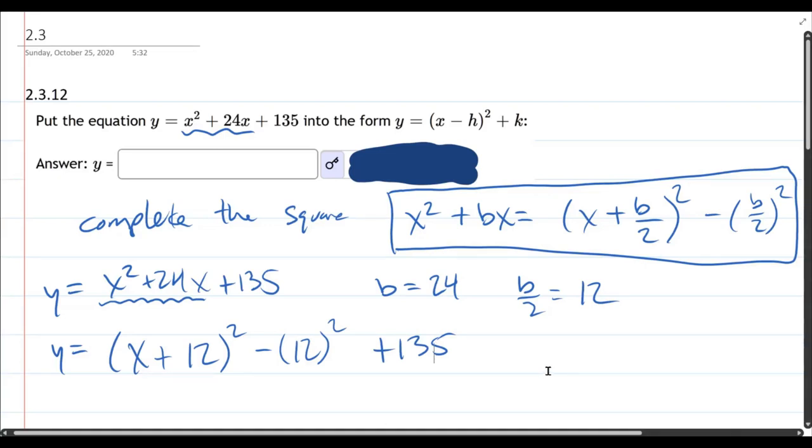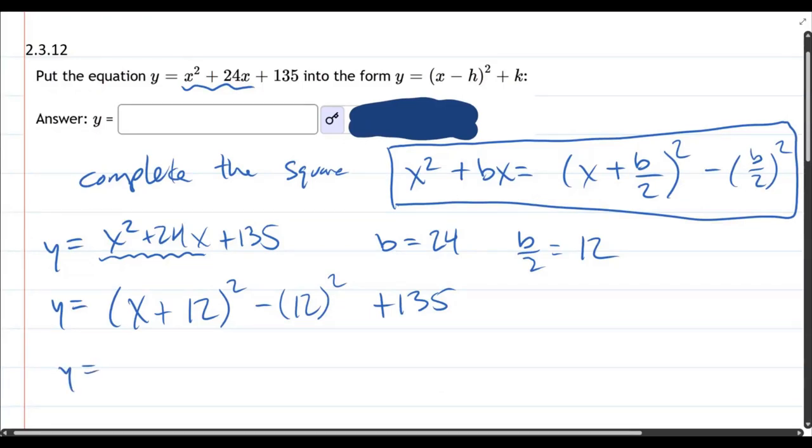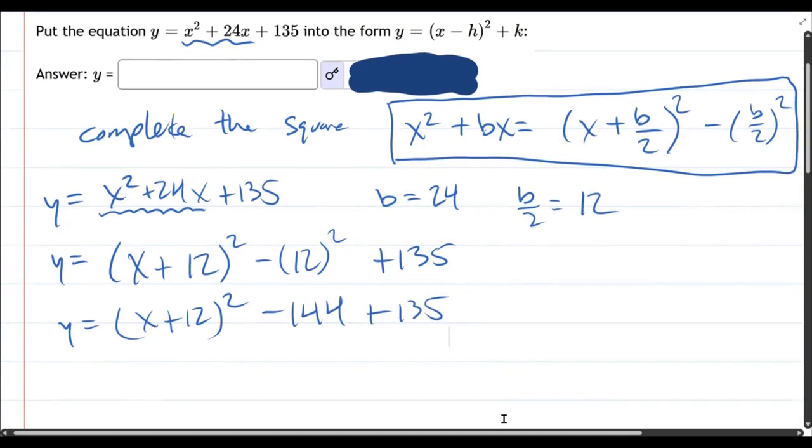So we're almost done here. I can see what h is, but we need to have one number here for k. So we just need to combine those two constants. 12 squared is 144. So it's minus 144 plus 135. And subtract these. I'm going to do something a little bit weird here. I'm going to write x minus negative 12.